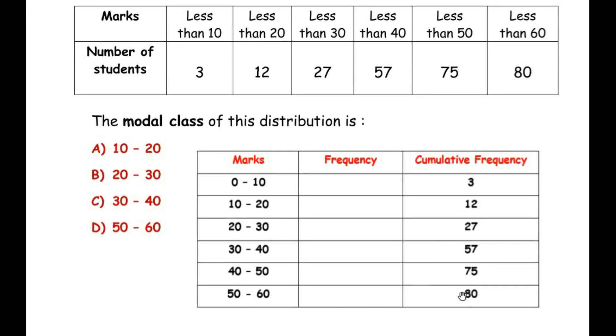Now using this cumulative frequency let us find out the frequency that is for example we have to find out how many students have got the marks between 10 and 20. This 12 is the total number of students that have got less than 10 as well as less than 20. So here we are trying to find out exactly how many students have got between 10 to 20. So it would be easier if you start with the last one that is number of students who have scored between 50 to 60 will be 80 minus 75. That is the last cumulative frequency minus its previous one. So we can write here 80 minus 75 is 5.